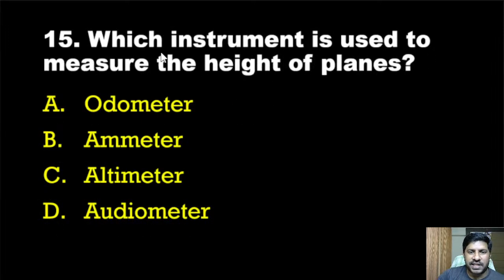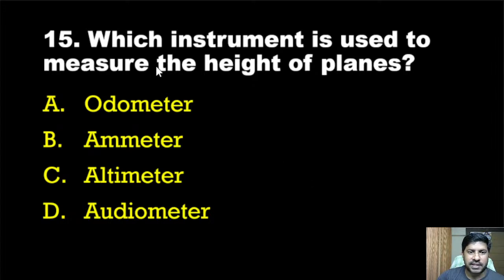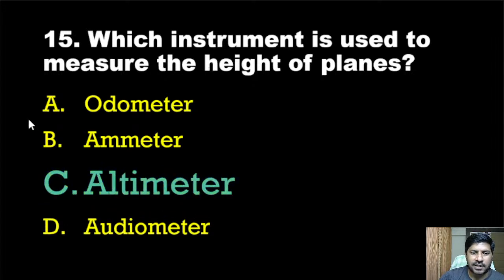Fifteenth question: Which instrument is used to measure the height of planes? Options are: odometer, ammeter, altimeter, audiometer. The correct answer is option C, altimeter. Altimeter is used to measure the height of planes.